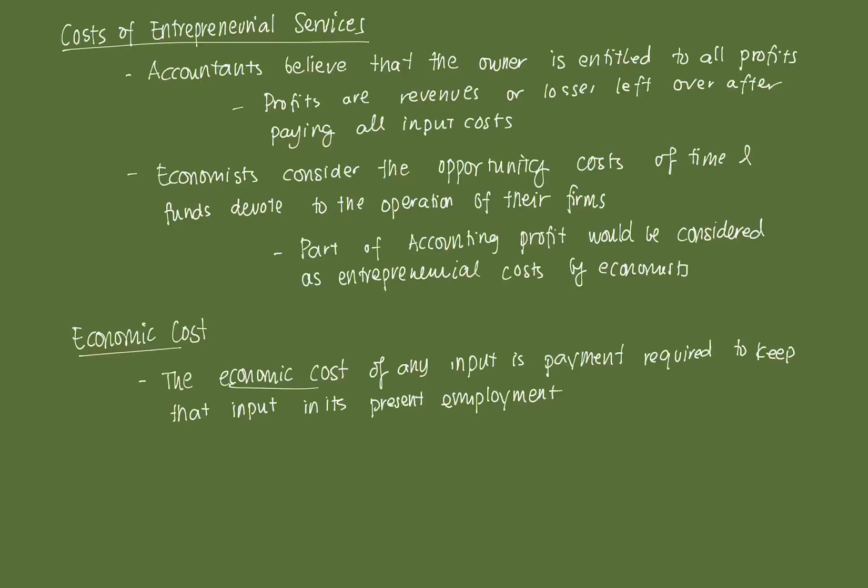This boils down to the definition of economic cost: the economic cost of any input is the payment required to keep that input in its present employment — what would keep the baker ensuring the bakery remains open and not diverting to some other task. The remuneration the input would receive in its best alternative employment also factors into the cost. So the diversion comes in the accounting for opportunity costs. We'll go into the procedure of cost minimization in the next video, but it's important to keep in mind the different costs that a firm would potentially face.